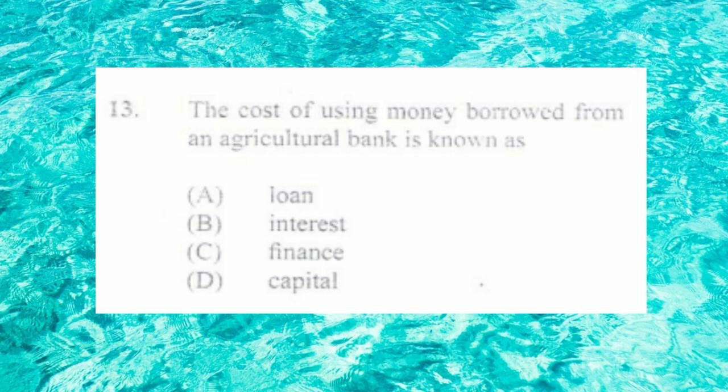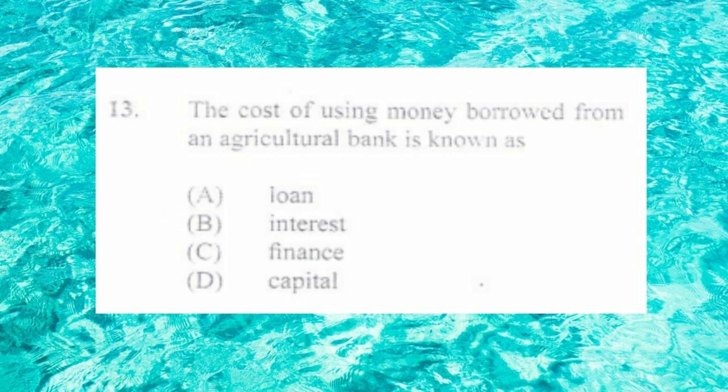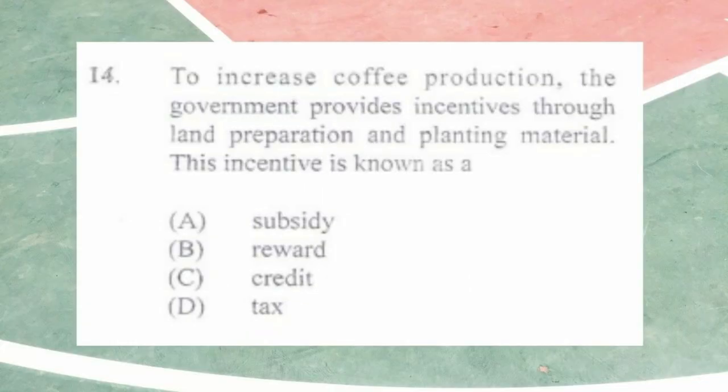Question number thirteen: the cost of using money borrowed from an agricultural bank is known as a) loan, b) interest, c) finance, d) capital. The answer is b) interest. For example, if you borrow ten thousand dollars and repay twelve thousand dollars, the two thousand dollars is the interest — the fee paid to the bank for borrowing their money.